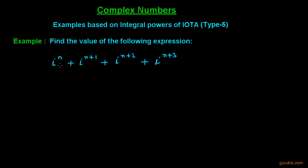the following expression: iota raised to the power n, plus iota raised to the power n+1, plus iota raised to the power n+2, plus iota raised to the power n+3, for all n belonging to the natural numbers. So let us see how to solve it. Here is iota raised to the nth power.